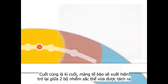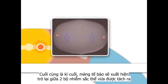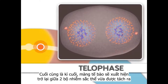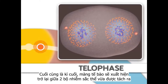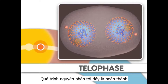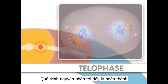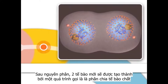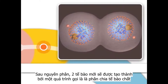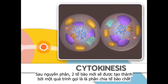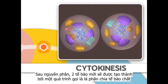Finally, during telophase, nuclear membranes reappear around the two sets of chromosomes. Mitosis is now complete. After mitosis, two new cells are formed by a process called cytokinesis.